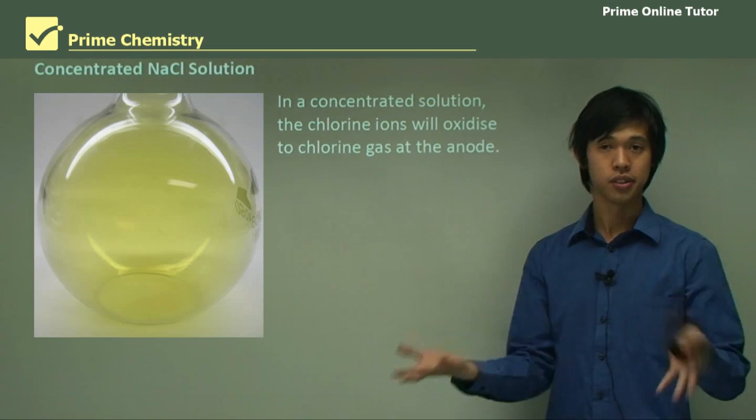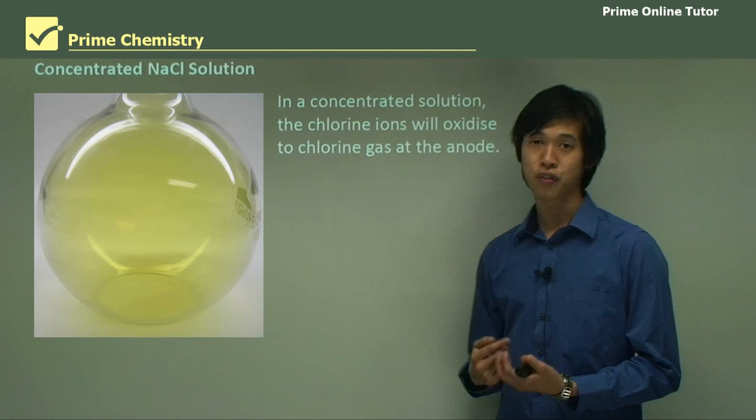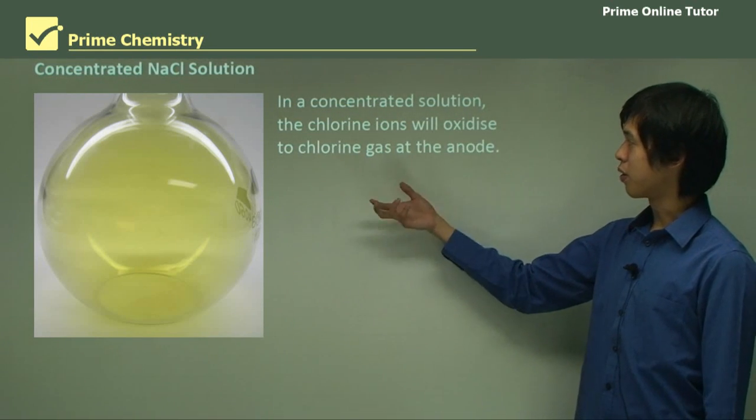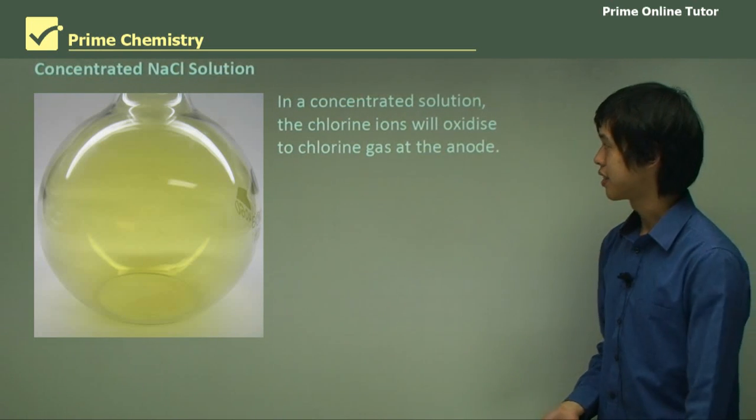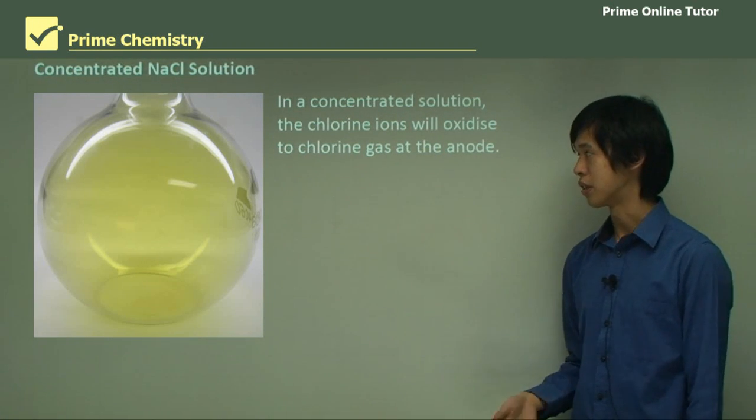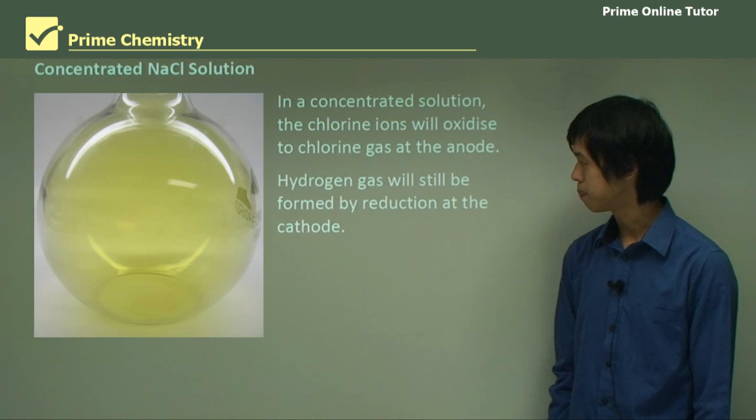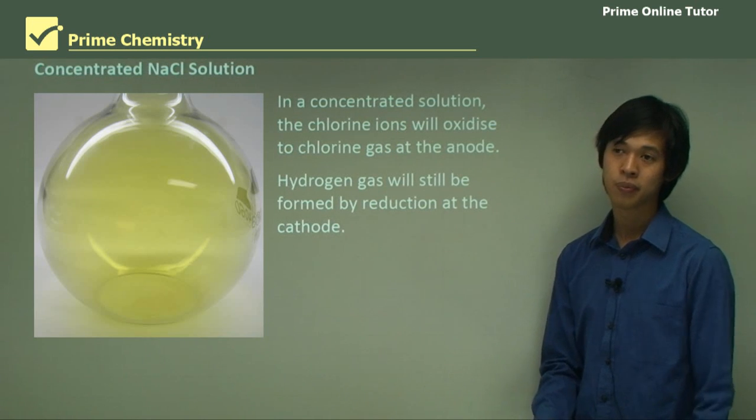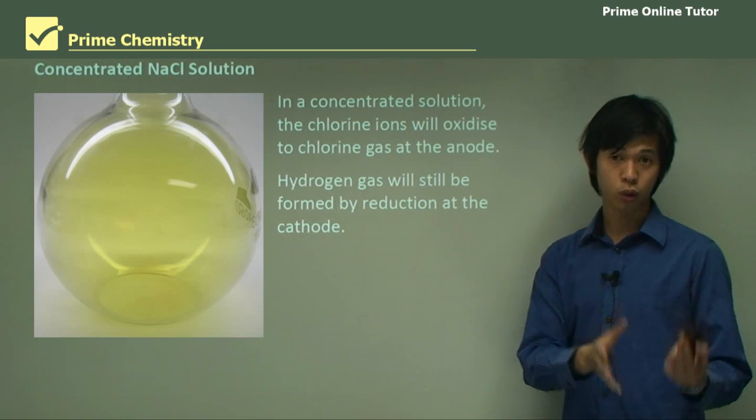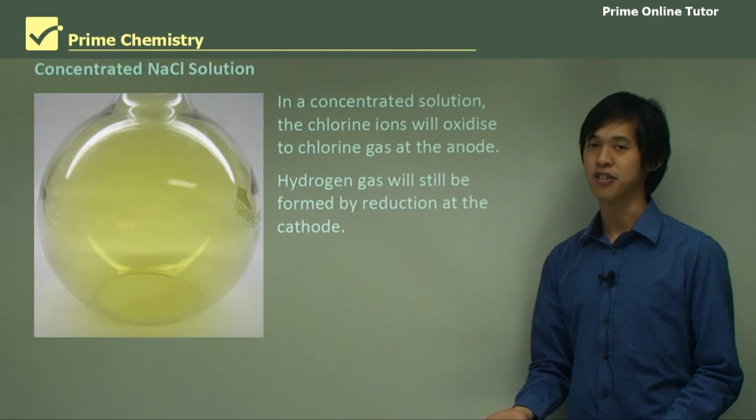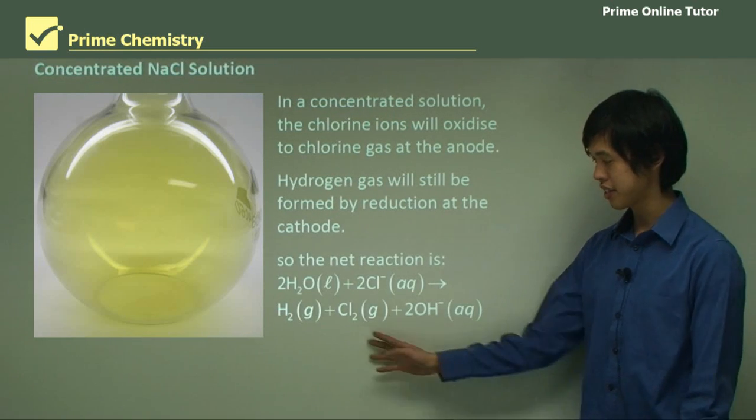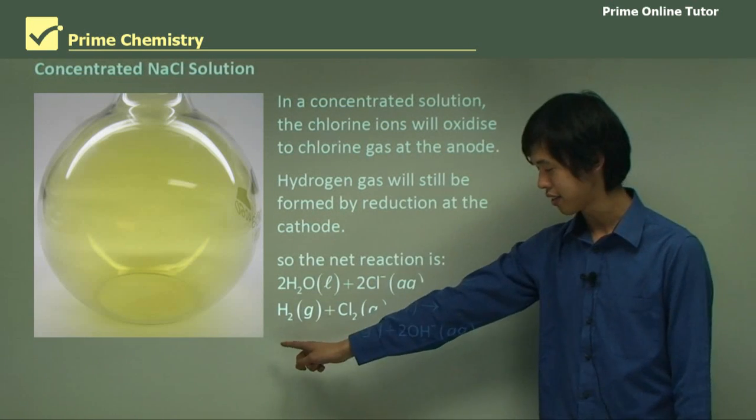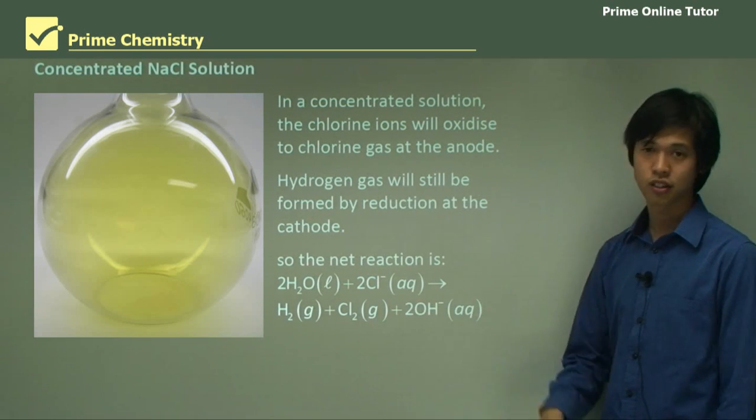Now that was for dilute solutions. What if we concentrated this solution? What if we made a really salty solution? Well, in a concentrated solution, the chlorine ions will oxidize to form chlorine gas at the anode. So the chloride ions will turn into chlorine gas at the anode. On the other hand, hydrogen gas will still be formed by reduction at the cathode. So this is the net reaction: Water plus 2Cl- gives you H2 gas plus Cl2 gas and 2OH-.